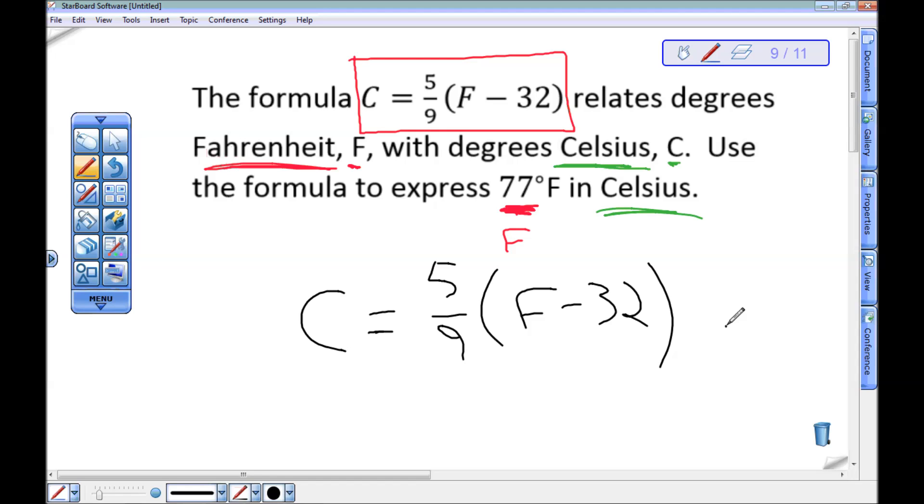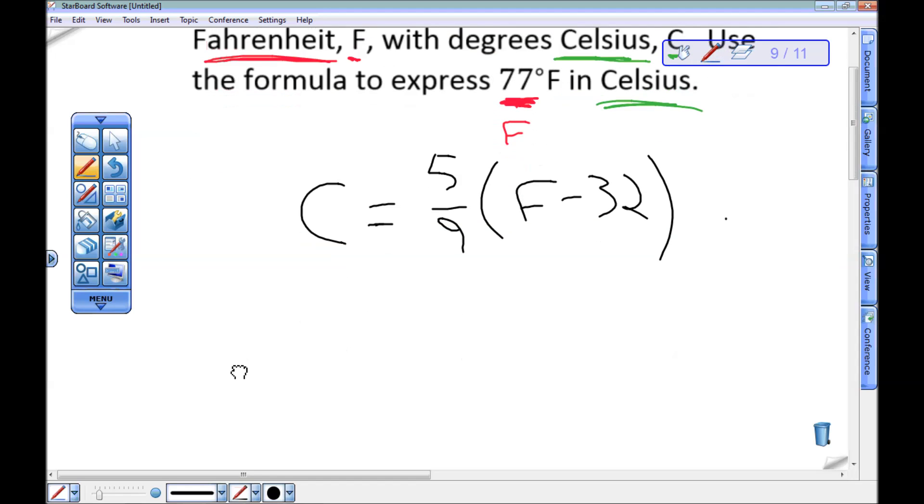I want to put 77 in here for F. So this is C equals five ninths times the quantity 77 minus 32.